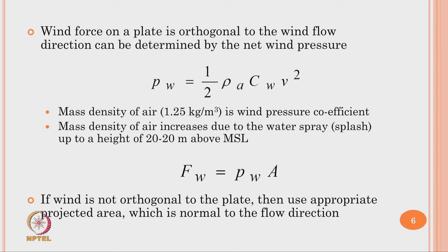In this equation, Cw, v, and ρ_A are the estimates to be calculated. Mass density ρ_A is taken as 1.25 kg/m³. Mass density of air increases due to water spray because of the splash effect up to a height of 20 meters above the mean sea level. Once you know the net wind pressure acting normal to the plate area, the force is given by p_w multiplied by the exposed area A.